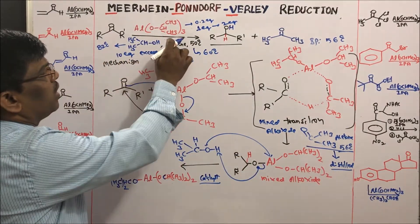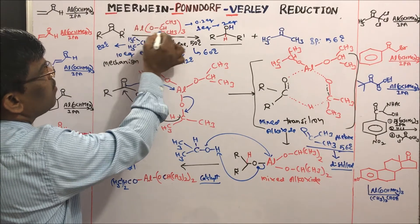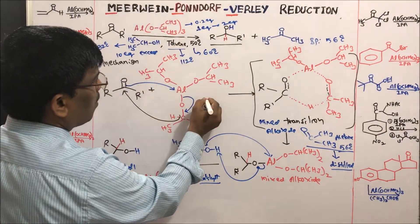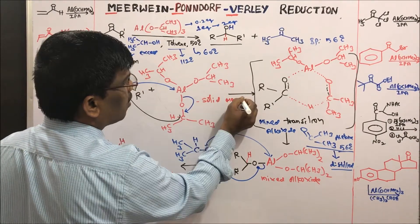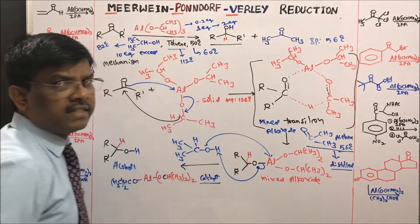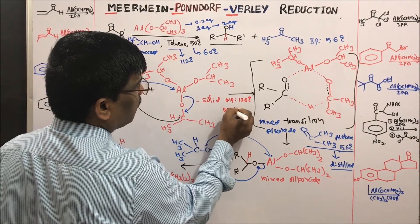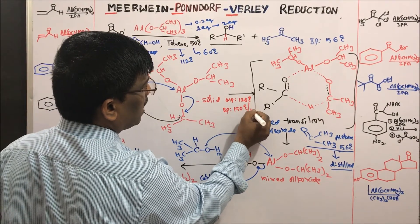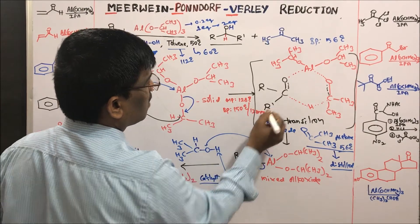Toluene is used as solvent. Aluminum isopropoxide is a solid compound with a melting point of around 128°C and a boiling point of 150°C at 12 mm Hg.